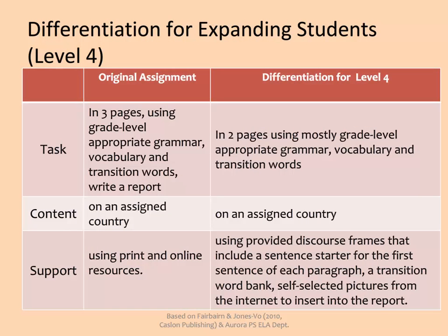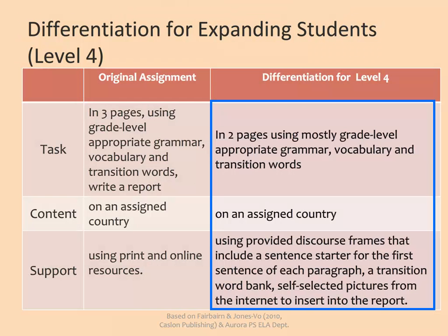For students at level 4, the assignment is differentiated somewhat, but essentially the students still need to write a paper on an assigned country independently. At this level, the length of the paper is shortened, and the expectations for accuracy are modified to acknowledge that students may not yet know all the language structures needed. It is at level 4 that supports begin to be put in place, including some sentence starters for paragraphs, a word bank for transition words, and pictures from the internet that students select themselves.